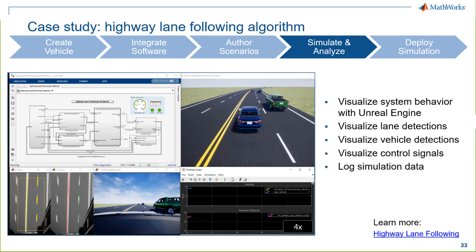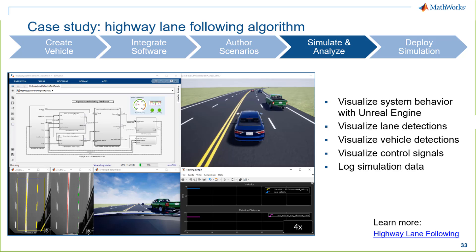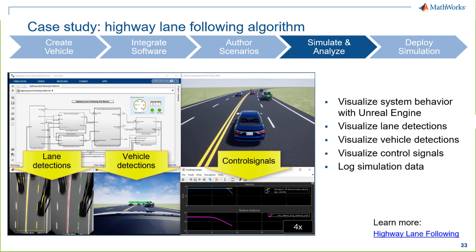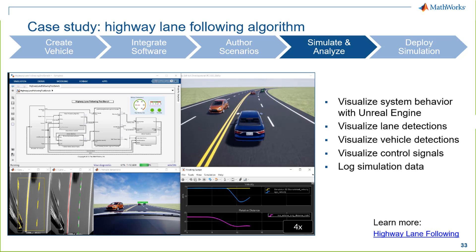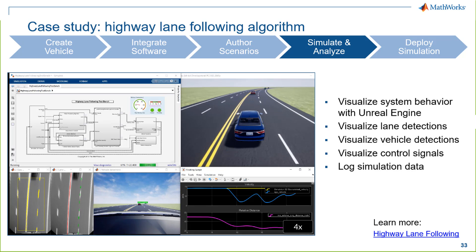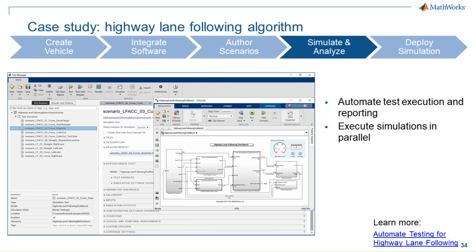Once we have our virtual vehicle set up, you can run the simulation and interactively visualize multiple pieces of information. On the upper right, we're visualizing system behavior using the Unreal Engine, which allows us to see how the vehicle is traversing between the lane markings. On the lower left, we can look at the performance of the lane marker detection algorithm — overlaying lane markings on top of the image frames to see how well it's performing. On the lower right, we're visualizing the control signals, which lets us see how the controller is performing for the specific scenario. This interactive visualization is very useful for gaining understanding of system performance or debugging.